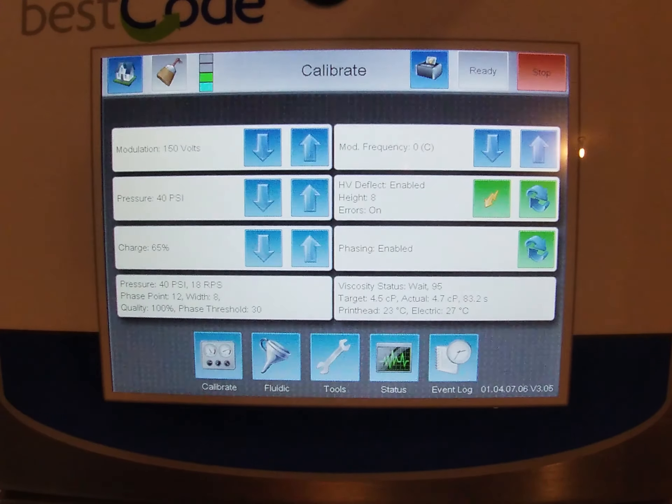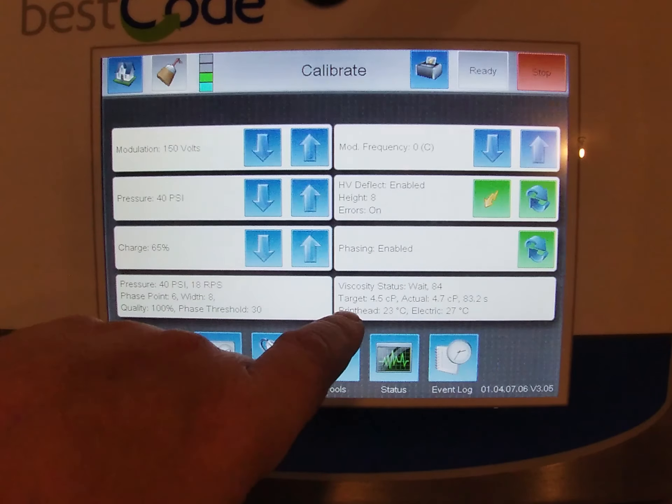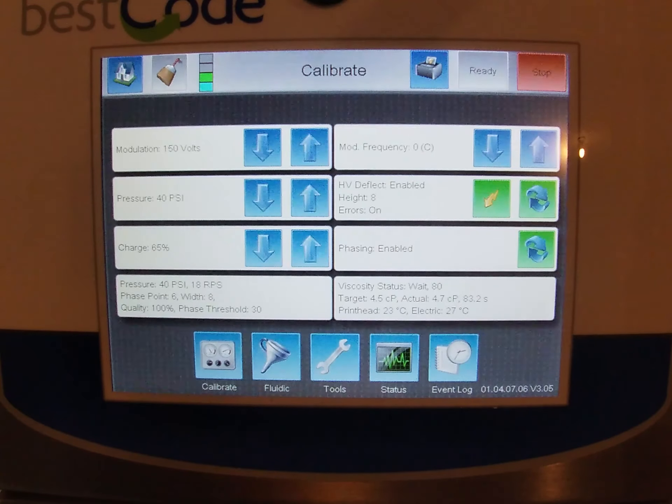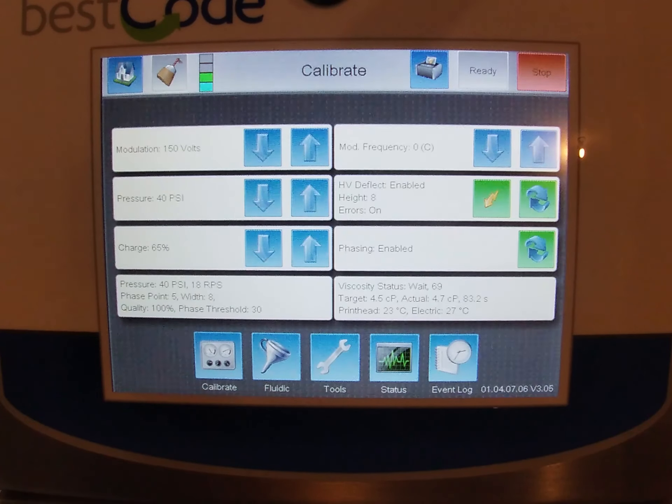And that gives us our midpoint between our lowest threshold and our highest threshold for modulation calibration. So any changes in temperature. So right here, my print head temperature is 23 degrees Celsius. If that changes and it gets hotter or colder, then the modulation will also change. So now we can set the midpoint so it takes any of those fluctuations.